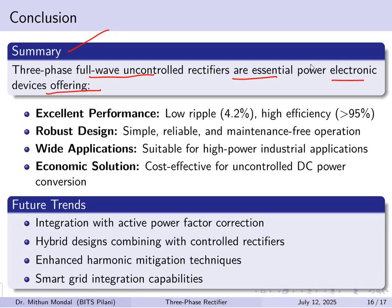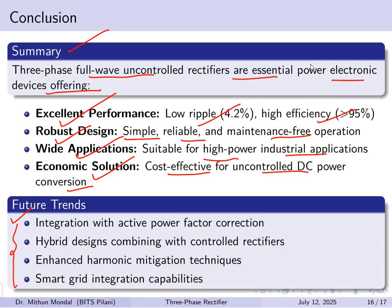In conclusion, three-phase full-wave uncontrolled rectifiers are essential for power electronic devices, offering excellent performance in terms of low ripple and high efficiency, a robust and reliable design with minimal maintenance, wide suitability for high-power industrial applications, and a cost-effective solution for uncontrolled DC power conversion. Future research areas include integration with active power factor correction, hybrid designs combining controlled rectifiers, enhanced harmonic mitigation techniques, and smart grid integration capabilities.